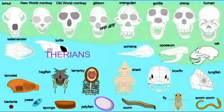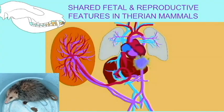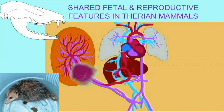We are Therians, descended from ancestral Therians, and the Jurassic early Therians gave rise to all the features that we share. In Therian mammals, embryos do not hatch from eggs, but rather develop inside the uterus of the female.